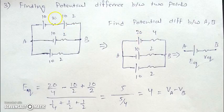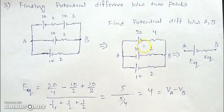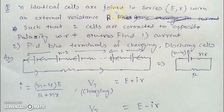In this type of question, two cells in series give us equivalent 20 V with 4 ohms internal resistance. Three cells — one of opposite polarity — are combined using the parallel formula (with a minus sign for the opposite cell), giving E_equivalent = 4 V and R_equivalent = 4/5 ohms. Since the circuit is open, no current flows from A to B, so the potential difference equals E_equivalent = 4 V.